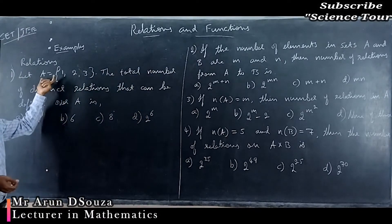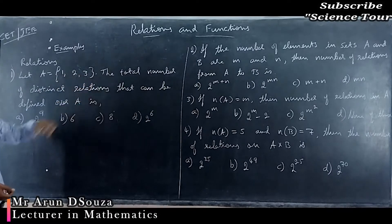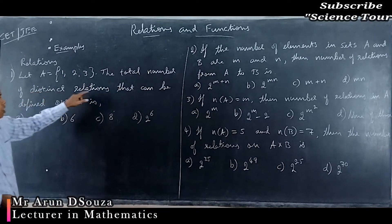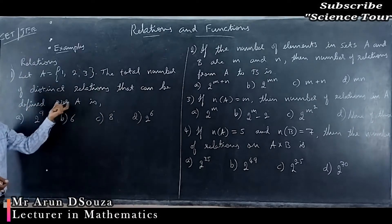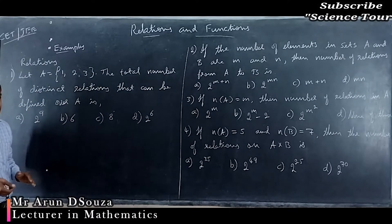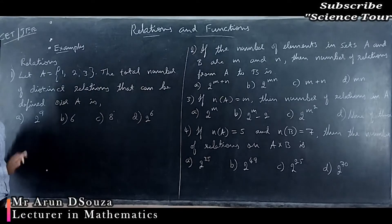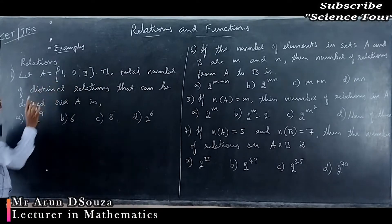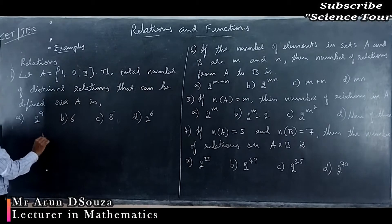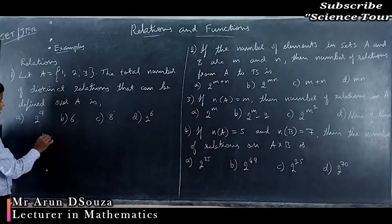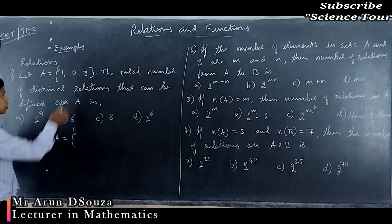Let A = {1, 2, 3}. The total number of distinct relations that can be defined over A is — understand the concept clearly. You have been given only one set, so first what you need to do is write the Cartesian product.